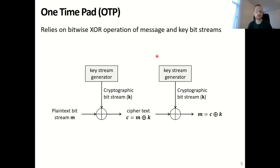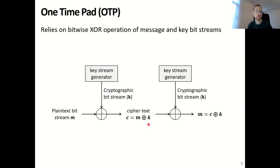How does the one-time pad work? It's actually very straightforward. It relies on the bitwise XOR operation of the message and key bit streams. We take our plaintext message m, which is a bit stream, and our key k, which is generated by a key generator and is of the same length, and we perform an exclusive OR of each bit of m with the corresponding bit of k. This gives us a ciphertext c, where each bit of c is the exclusive OR of the corresponding bits of m and k. Due to the properties of XOR, the inverse operation is the same — the inverse function of XOR is XOR — so to recover message m, we XOR every bit of c with the corresponding bit of k.